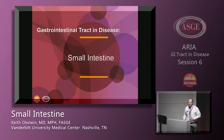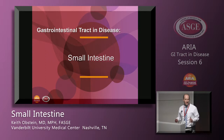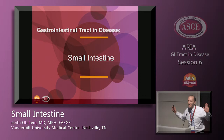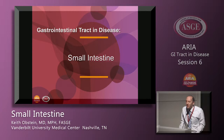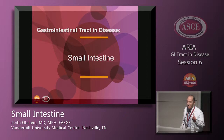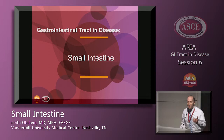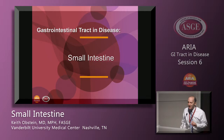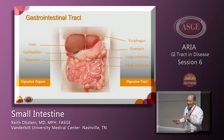On colonoscopy, the question I like to ask fellows is: what are the only two locations where we know with 100% certainty where we are? The answer is the terminal ileum and the rectum. The cecum has false cecums due to flexures. The terminal ileum looks different because you can see the villi, and the rectum because you put it right in.